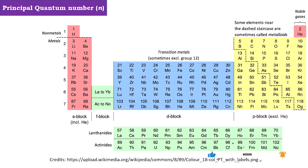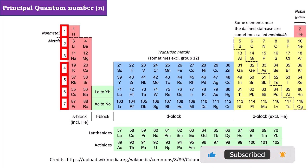Let's consider this periodic table. In the periodic table, on the left hand side, the numbers 1, 2, 3, 4, 5, 6, and 7 represent the values of principal quantum number.